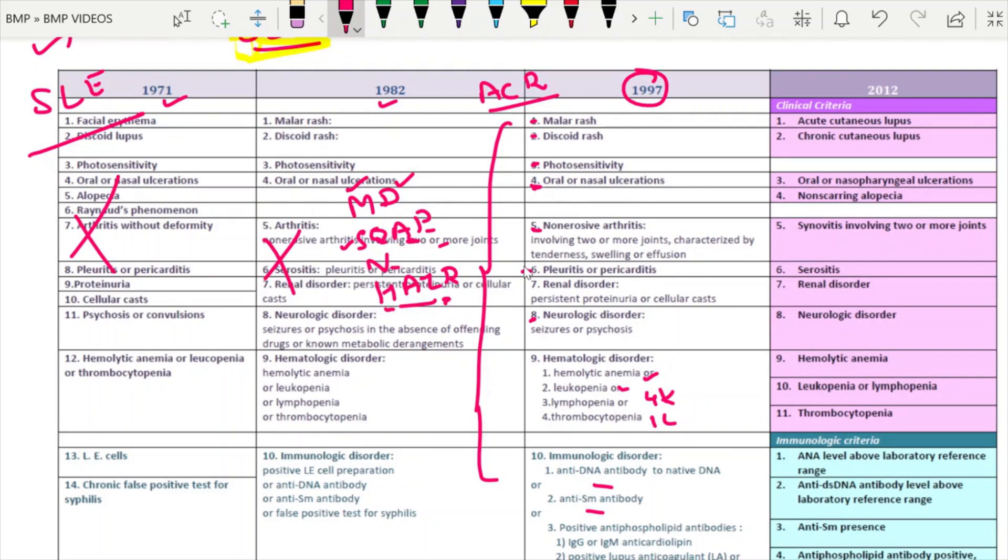R is renal involvement. Here the proteinuria is either 24-hour urinary protein of more than 500 milligram or presence of any cellular casts. This was the description given in the 1997 ACR EULAR criteria. How to diagnose systemic lupus erythematosus? Out of this, 4 out of 10 parameters should be present. If it is present, the patient fulfills the diagnostic criteria for systemic lupus erythematosus. The sensitivity with this is around 70 to 91 percent and specificity is around 92 percent approximately.